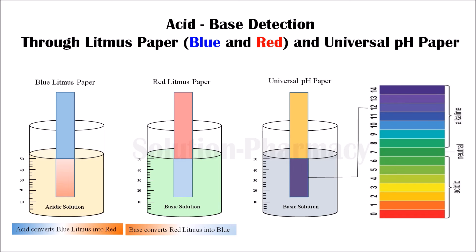If the color of the universal pH paper changes to deep yellow and matches the yellow color of value 3 on the scale, it means the solution is acidic in nature and the pH value is 3. If the color changes to light green and matches the green color of value 4 on the pH scale, it means the pH value of our solution is 4, which is again acidic in nature.